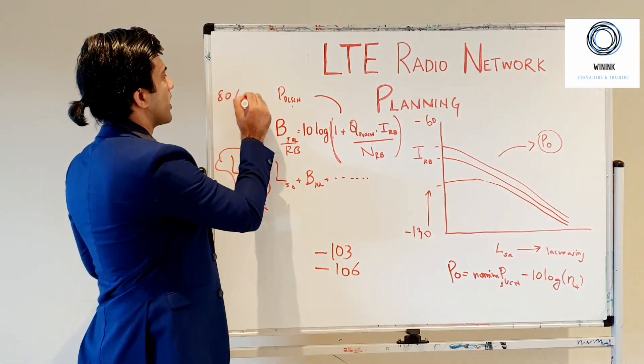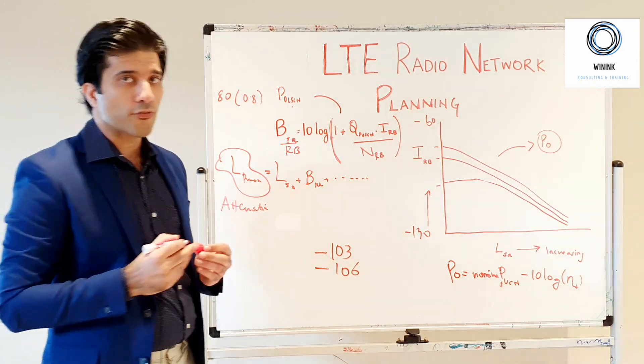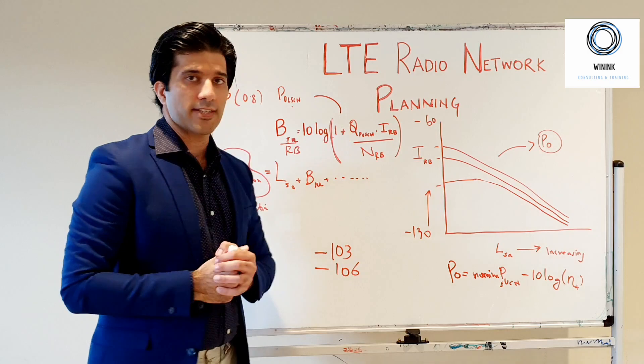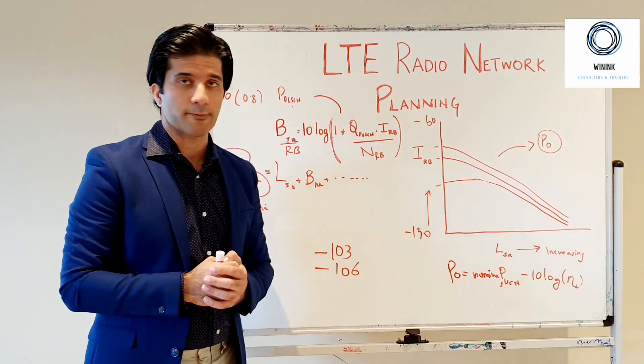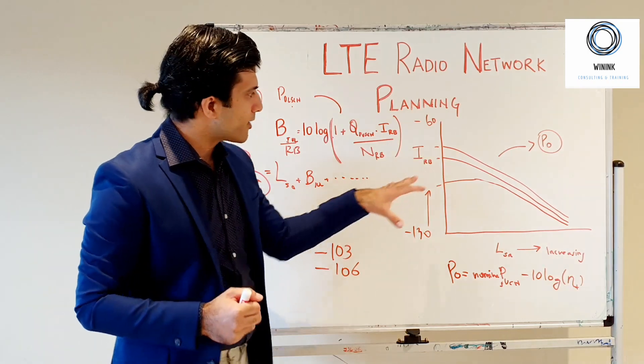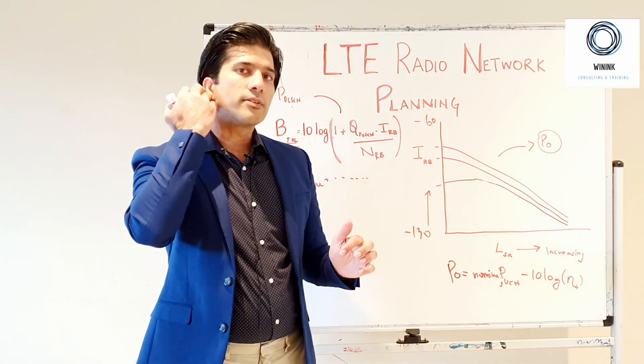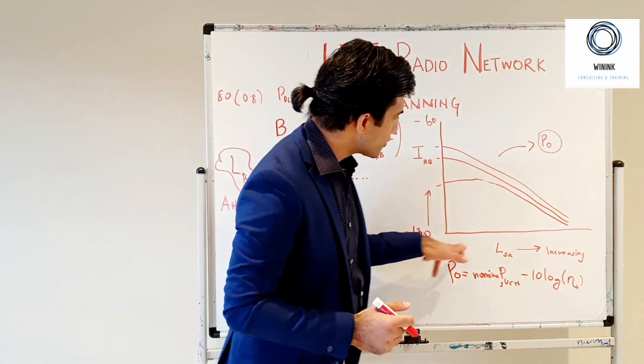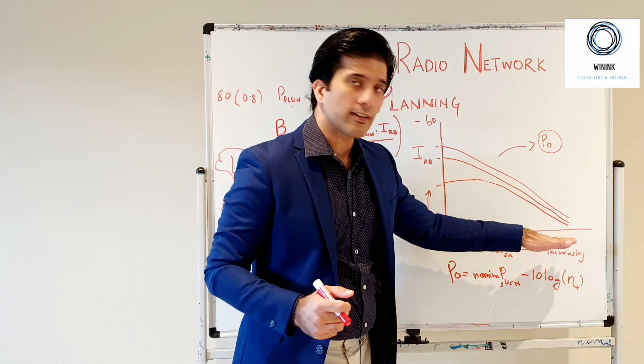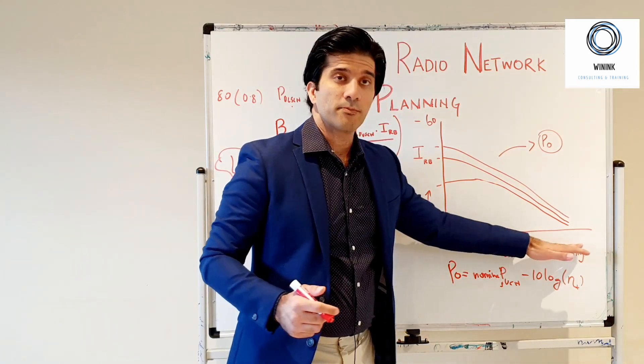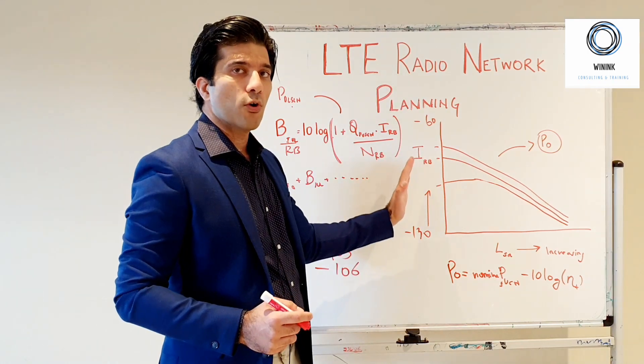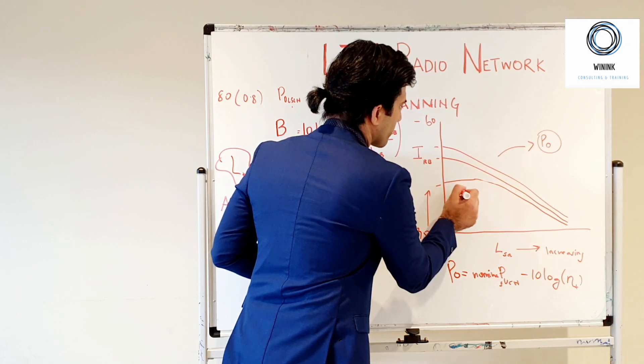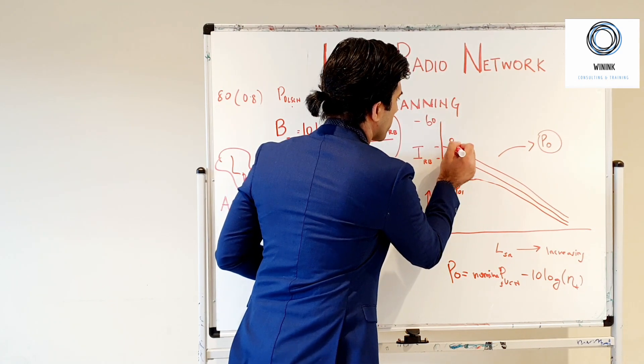As we are calculating this per RB, we will have to put a load value. For example, if you're using 80 percent of your resource blocks for your physical uplink shared channel, then we have 80 percent here. If you're using 100 percent, then we have 100 percent here. Then you have this I_RB. Now I_RB is usually calculated with simulations, but in order to give you an idea how I_RB is simulated, this is your increasing Lp, so this is your increasing path loss, and this is your increasing value for I_RB.